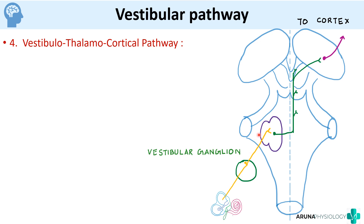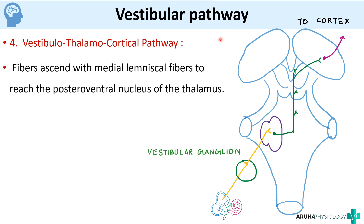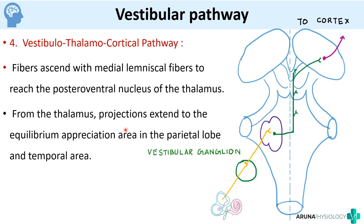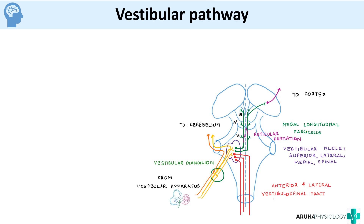The fourth pathway is the vestibular thalamocortical pathway, which goes from the vestibular nuclei to the thalamus and then to the cortex. The fibers ascend with the medial lemniscus fibers to reach the posteroventral nucleus of the thalamus. From the thalamus, projections extend to the parietal lobe and temporal lobe, which are mainly concerned with equilibrium.